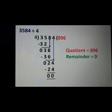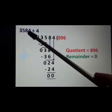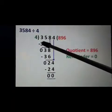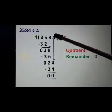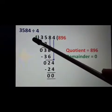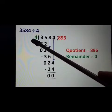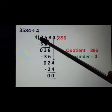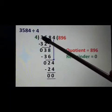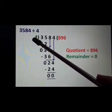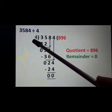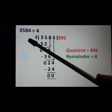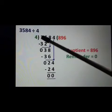Let's see one more example: 3584 divided by 4. Here our dividend is 3584 and the divisor is 4. We have to see the table of 4. If we take one digit, the first digit is 3 and 3 is smaller than 4. So we will take two digits because it is not possible to divide 3 by 4.